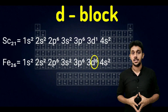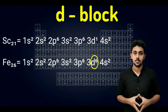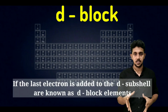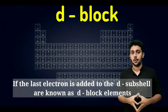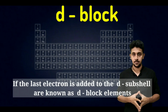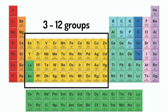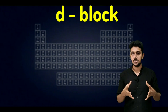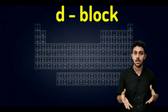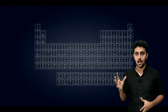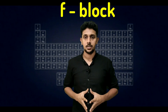Hence iron is a d-block element. If the last electron is added to the d sub-shell, the element is known as a d-block element. In the modern periodic table, groups 3 to 12 are called d-block elements because their last electron is added to the d sub-shell.